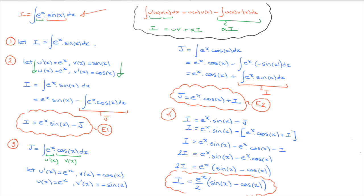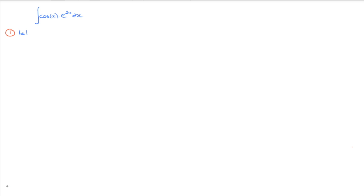Let's look at a second example of recursive integration by parts: the integral of cosine of x times exponential of 2x. We're going to follow the same four steps as before. Step one: we name this integral capital I. So we write: let capital I equal to the integral of cosine of x times exponential of 2x.